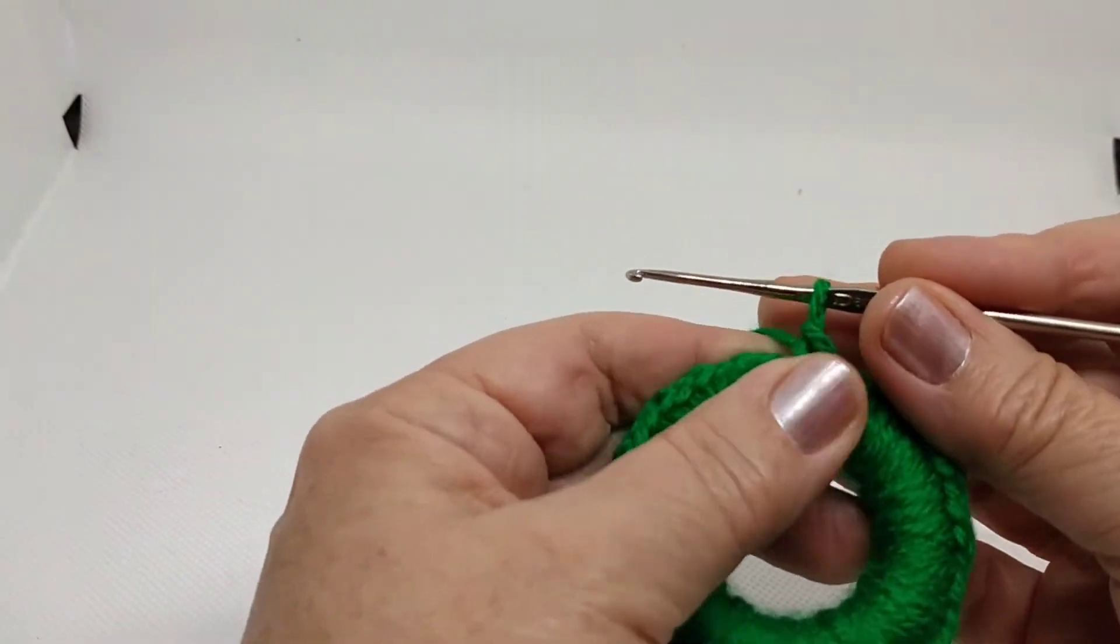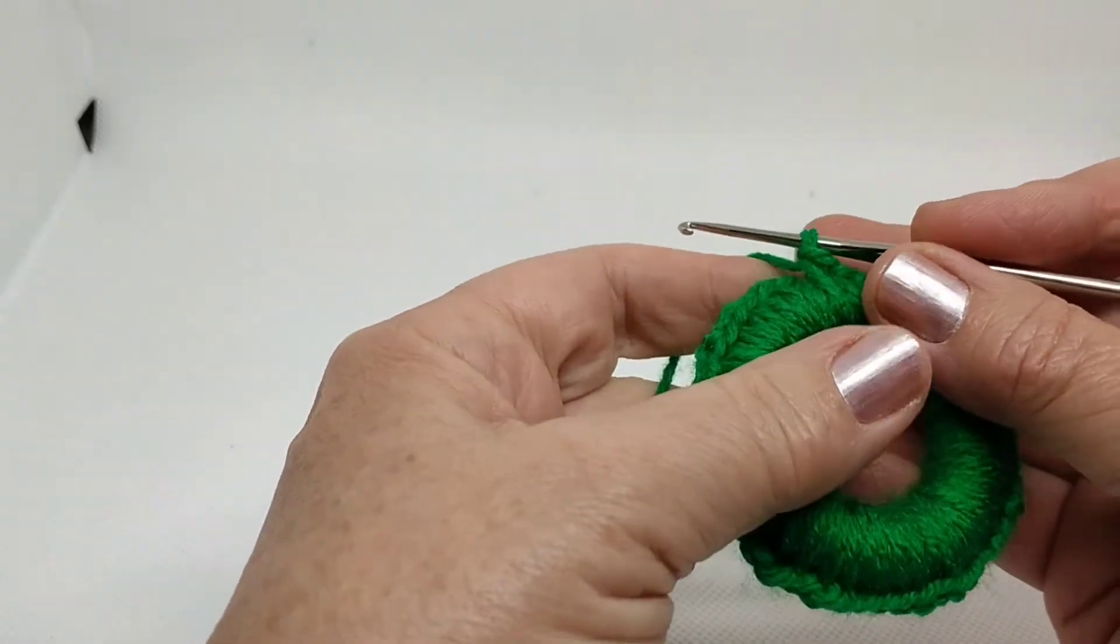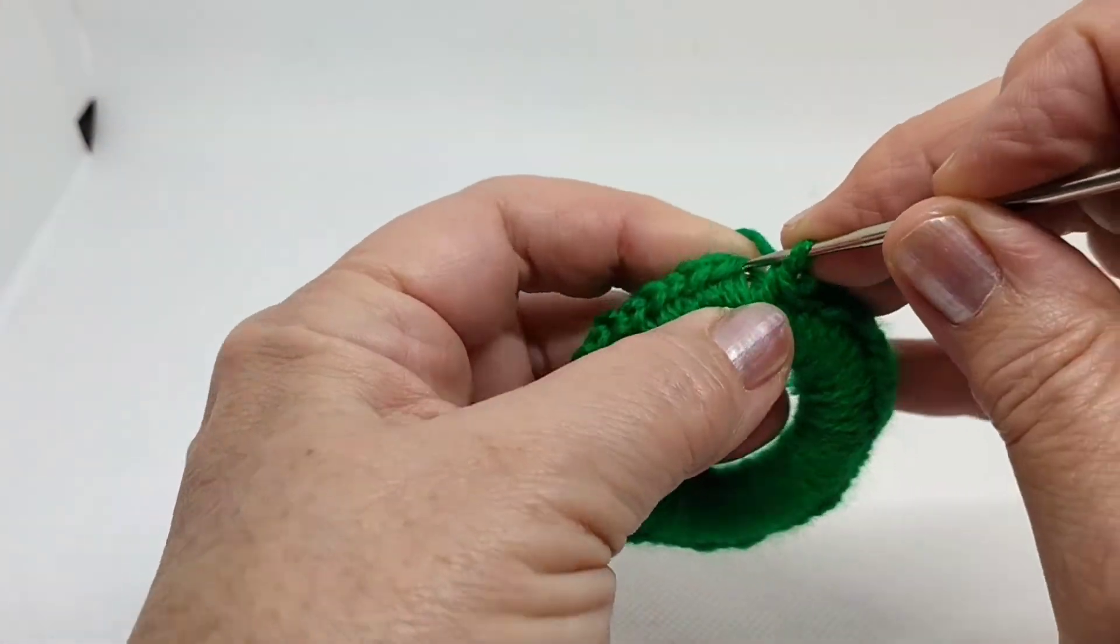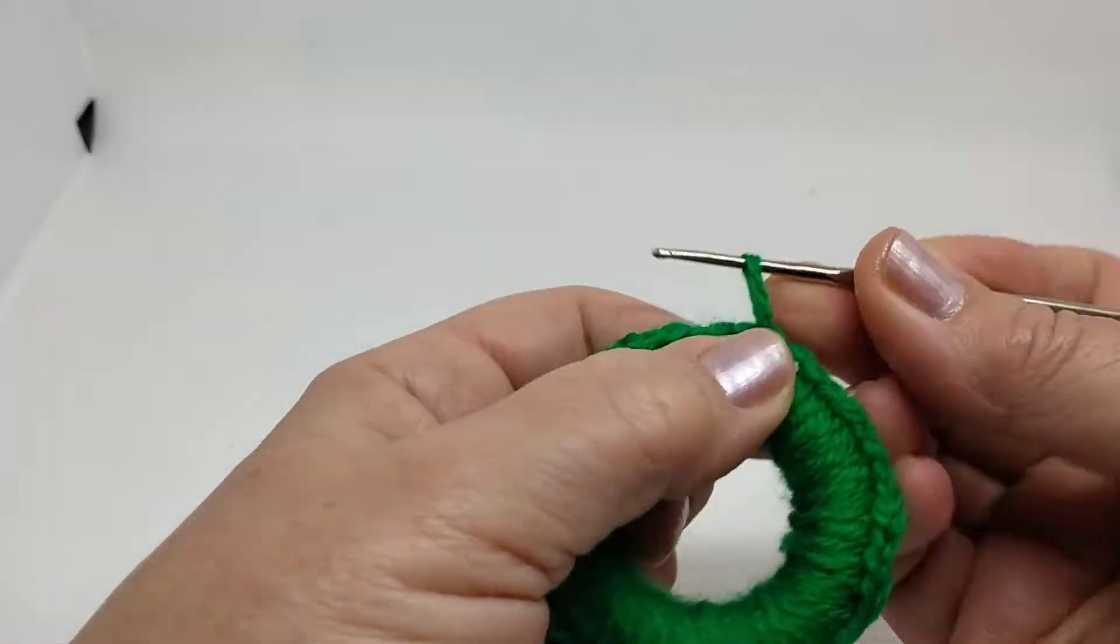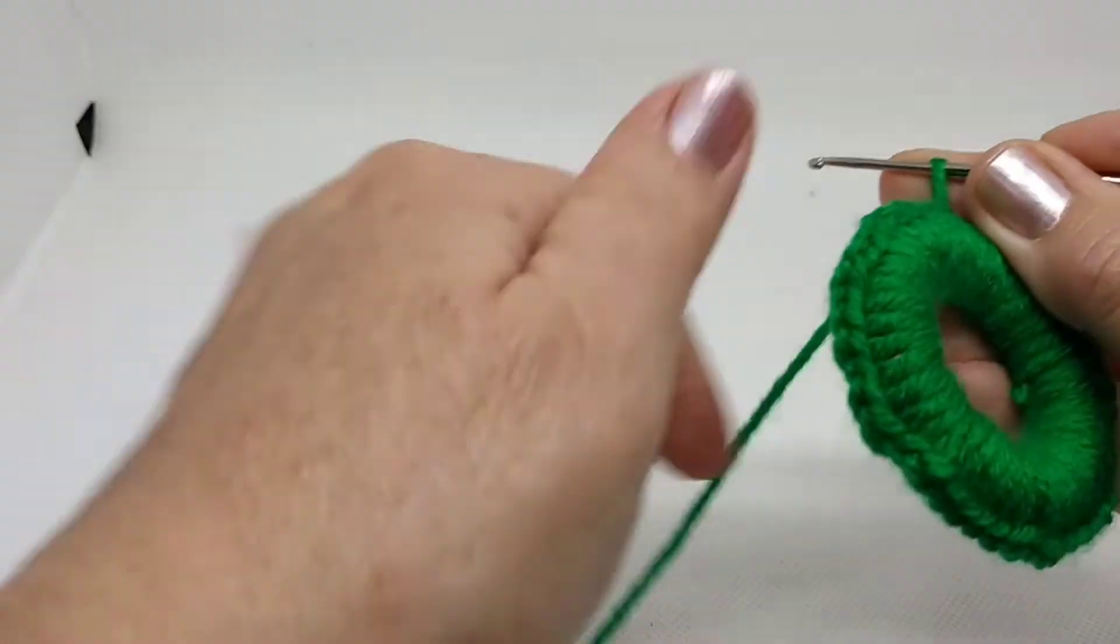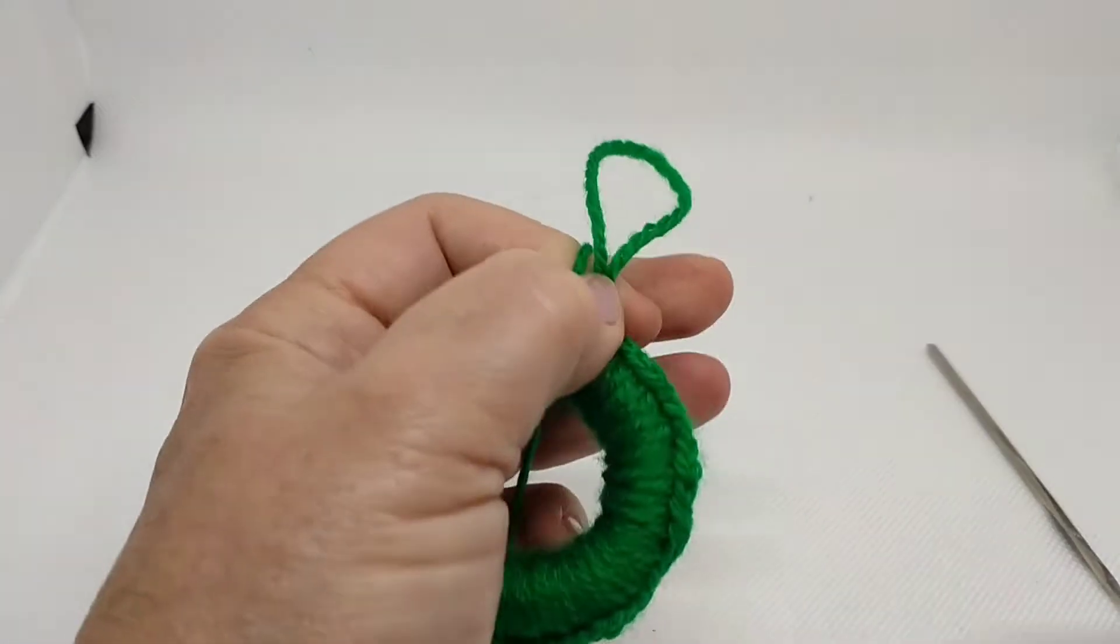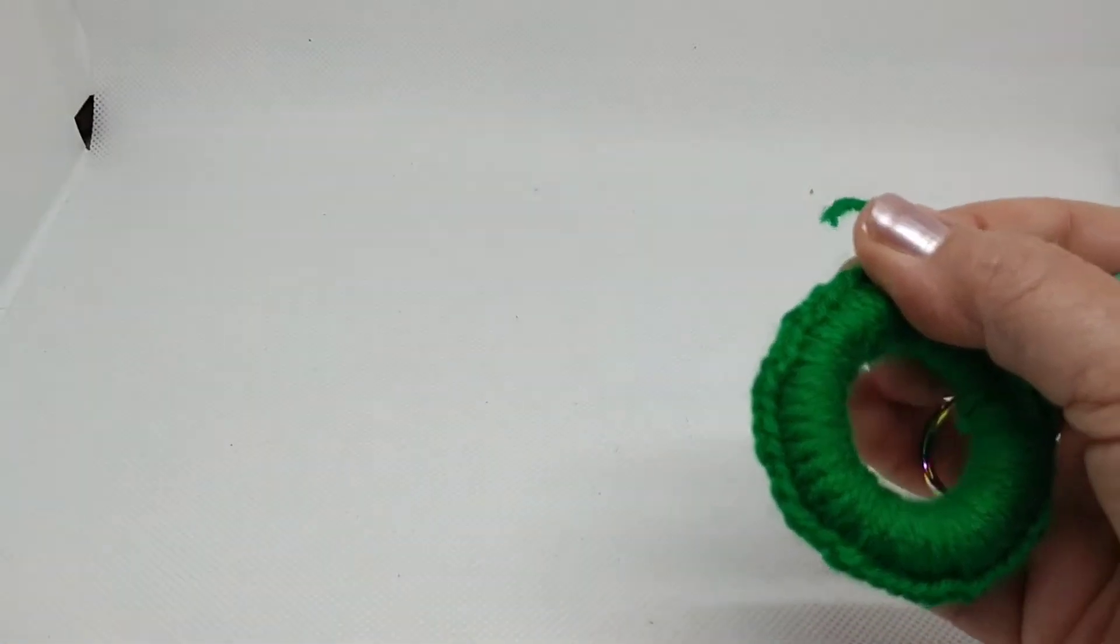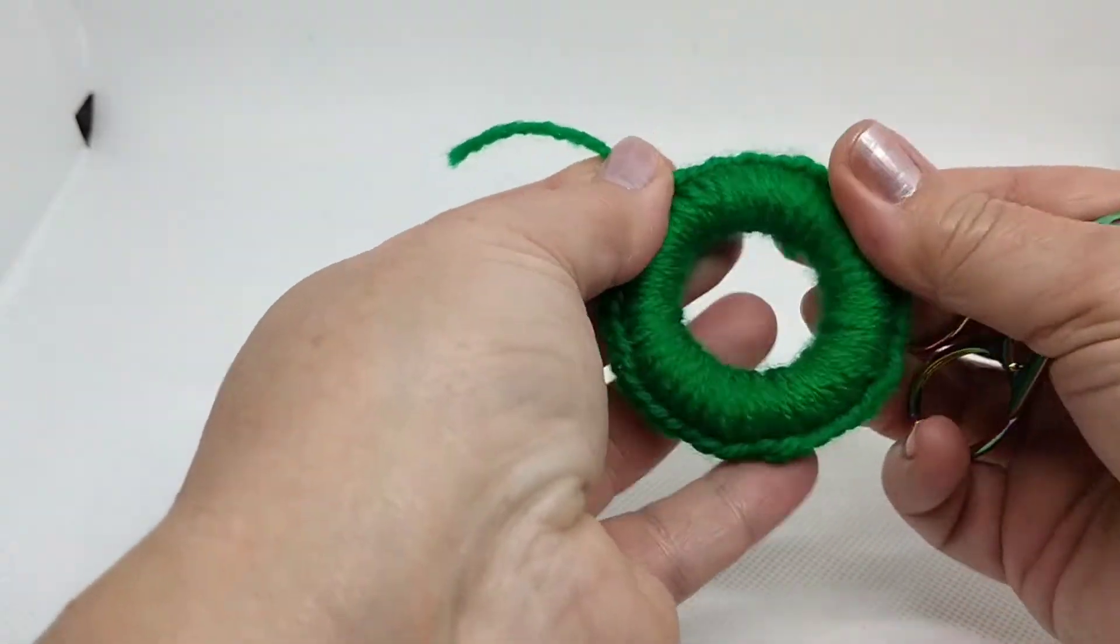A todo alrededor, la anilla tiene que quedar completamente cubierta. Tenemos que ponerlo bien tupido. Ya mi anilla quedó cubierta por completo, no se ve ninguna parte de la anilla. Y aquí vamos a cerrar con un punto deslizado. Y ya cortamos, porque no vamos a usar más el verde. Así queda la anilla, bien cubiertita.